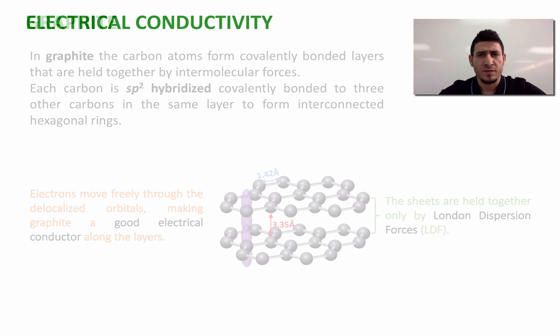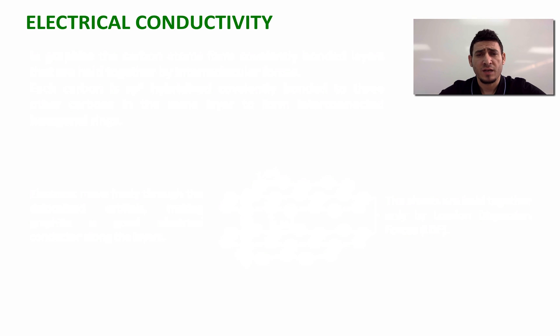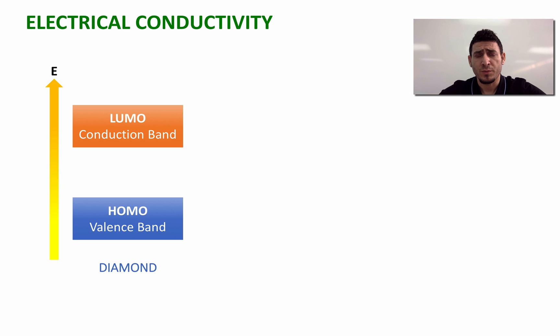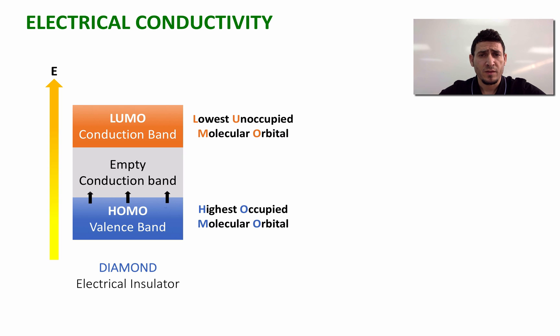Speaking of electrical conductivity, let's compare the electrical conductivity of diamond versus that of graphite. If you look at the energy diagram of the molecular orbitals of diamond, we can see that there is a large gap between the HOMO and the LUMO. The HOMO stands for highest occupied molecular orbital, or what's also called the valence band. The LUMO stands for lowest unoccupied molecular orbital, or what's called the conduction band. It's going to be hard to transfer electrons from the HOMO to the LUMO because of the large gap between the two bands. This large gap makes diamond an electrical insulator.